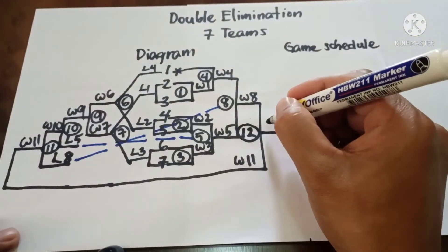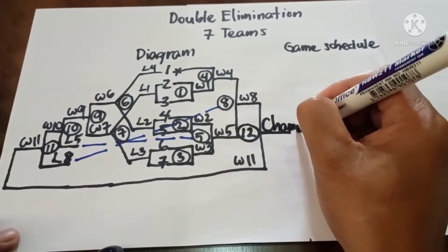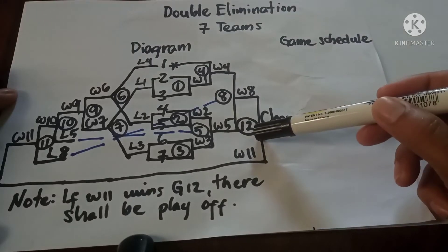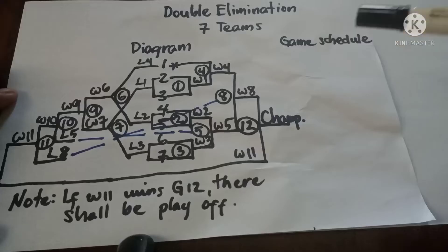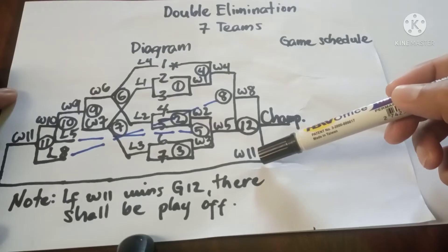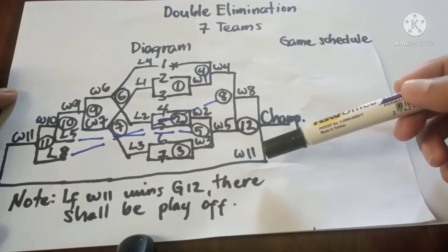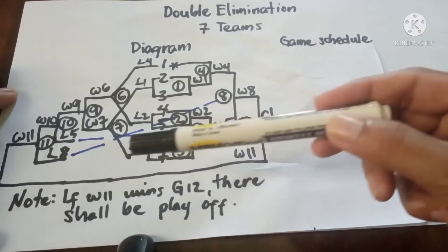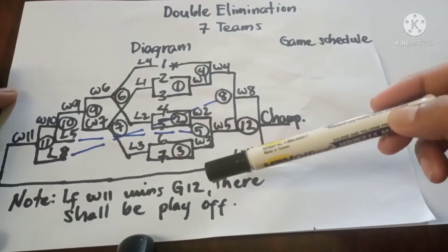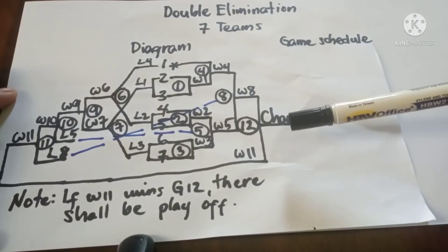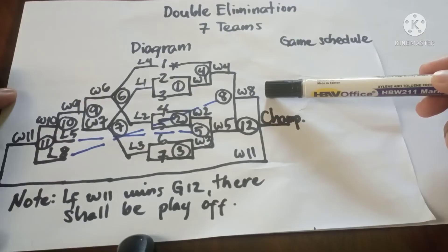Now, our concern is if Winner 11 wins Game 12, meaning Winner 8 and Winner 11 have the same number of losses. Don't forget to write a note: if Winner 11 wins Game 12, there shall be a playoff to break the tie, because Winner 8 has yet to be beaten twice.